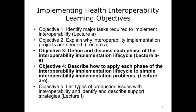This unit will cover the following learning objectives: 1. Identify major tasks required to implement interoperability. 2. Explain why interoperability implementation projects are needed. 3. Define and discuss each phase of the interoperability implementation life cycle. 4. Describe how to apply each phase of the interoperability implementation life cycle to simple interoperability implementation problems. 5. List types of production issues with interoperability and identify and describe support strategies.